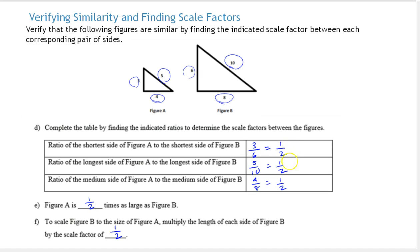Because all of these scale factors match up — and in the reverse direction they were reciprocals — we have verified that these figures are in fact similar, because they have the same scale factor for every corresponding pair of sides.